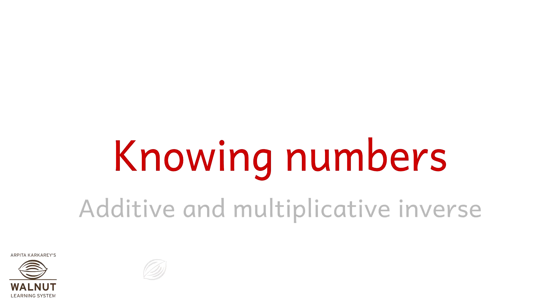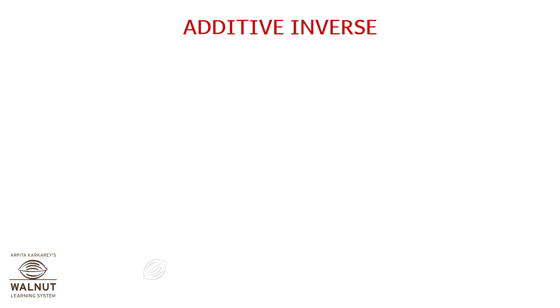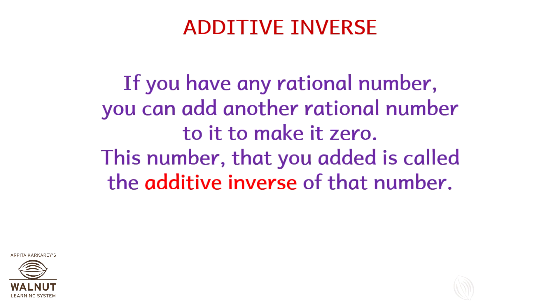Knowing Numbers: Additive and Multiplicative Inverse. Let's see what additive inverse is. If you have any rational number, you can add another rational number to it to make it zero. This number that you added is called the Additive Inverse of that number.